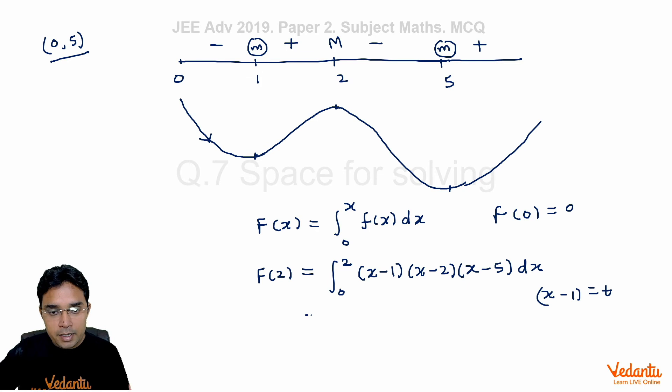Because then this integral will have limits -1 to 1. x - 1 will be t, x - 2 will be t - 1, and x - 5 will be t - 4, dt. Why I have done like this, please understand. Now I can write this as from -1 to 1, and this will be t³ + 4t, one part, and -5t², another part.